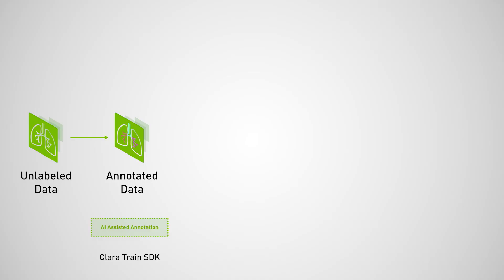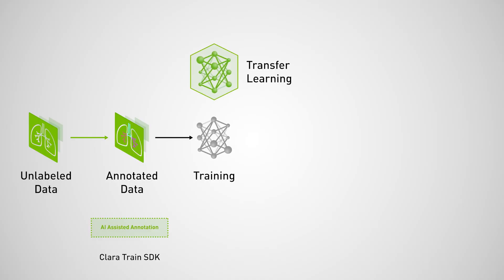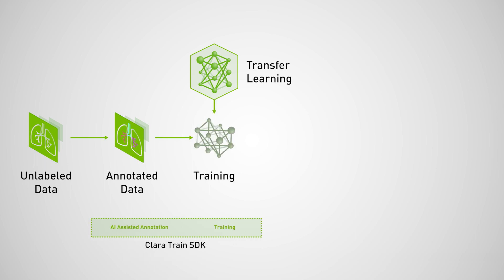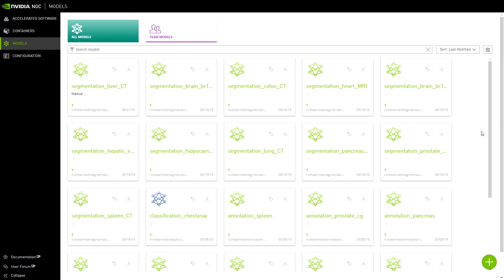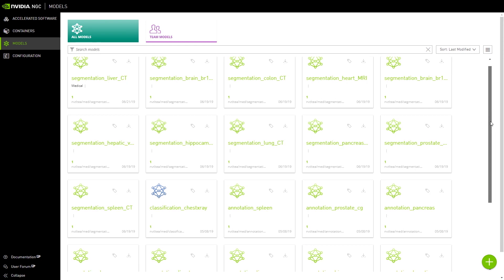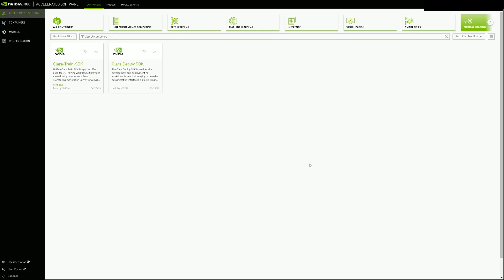The next step is to create an AI model. You can either train one from scratch or adapt an existing one with techniques like transfer learning — Clara Train SDK can do both. The SDK includes 24 pre-trained AI models and a Python-based library with APIs that make it simple to adapt and train models to new datasets.